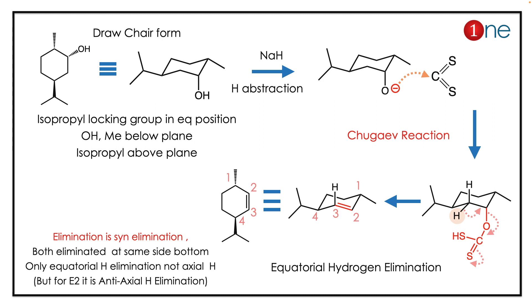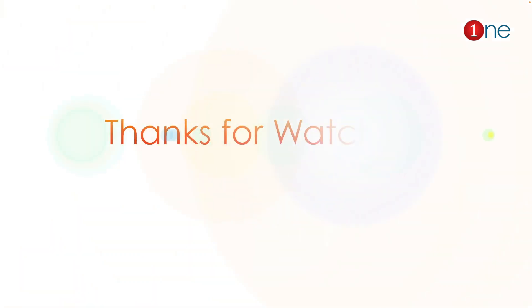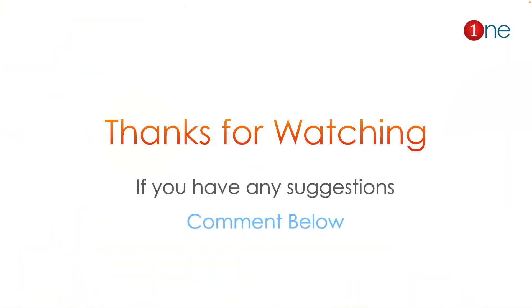The concept you have to learn here is Chugaev elimination. Chugaev elimination is always a syn elimination — syn hydrogen is lost to give the adjacent syn alkene. That's all from this video. Thanks for watching.